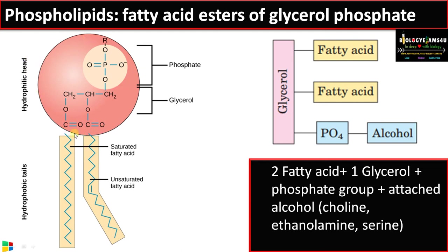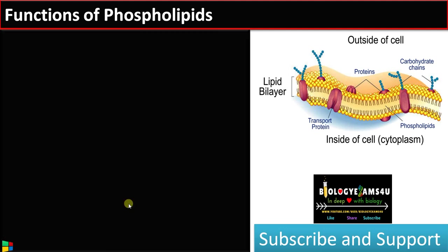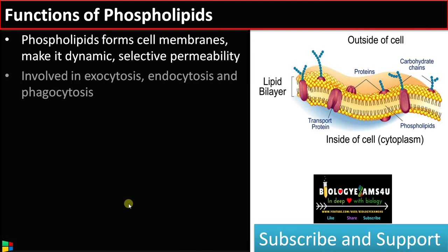So this is a phospholipid — phospholipids have a hydrophilic head group and a hydrophobic tail made up of fatty acids. Moving to the functions of phospholipids: they are the most important constituent of cell membranes — mitochondrial membrane, ER membrane, Golgi membrane, and all membranes — making them selectively permeable. They are also involved in exocytosis, endocytosis, and phagocytosis in phagocytes like macrophages.